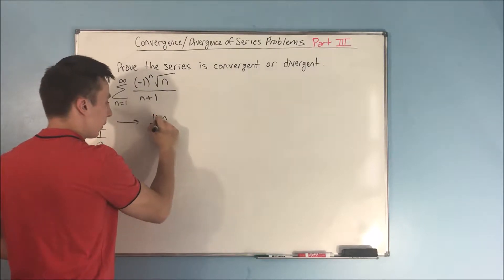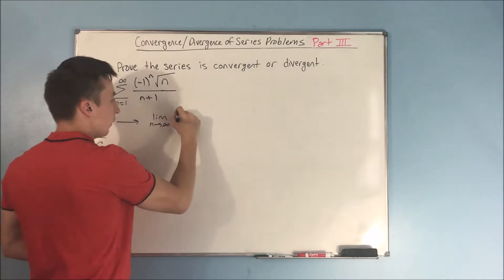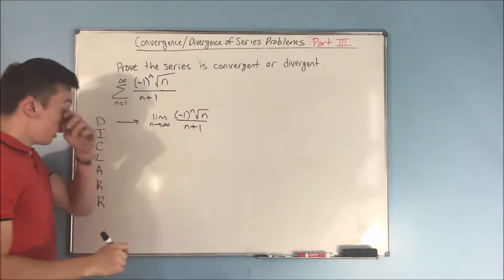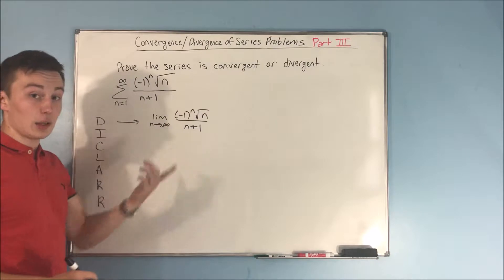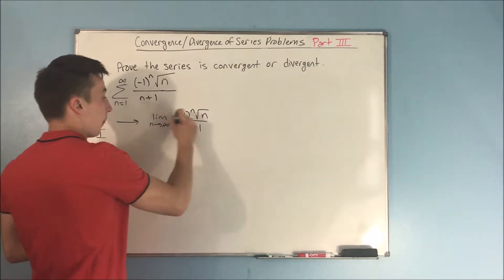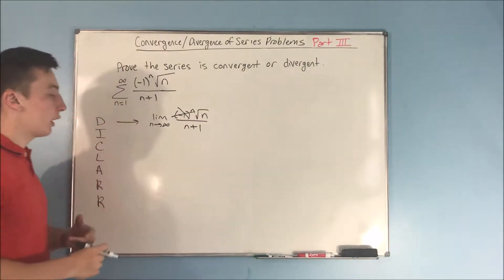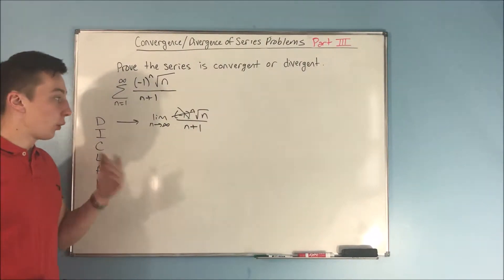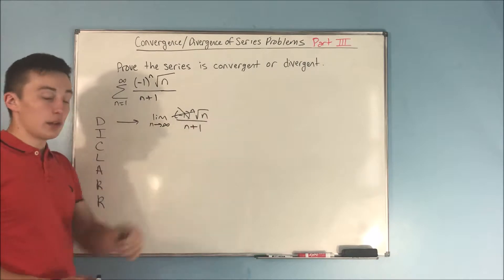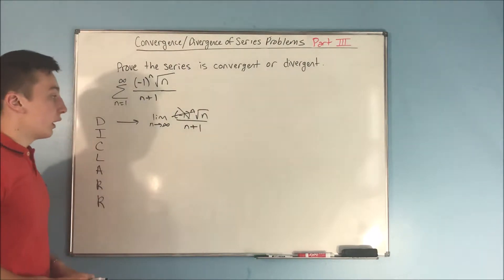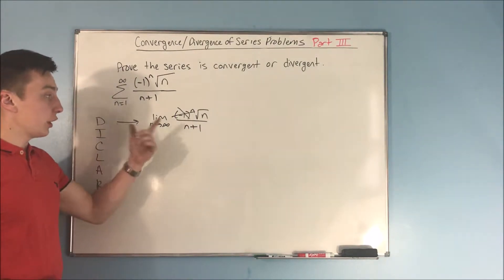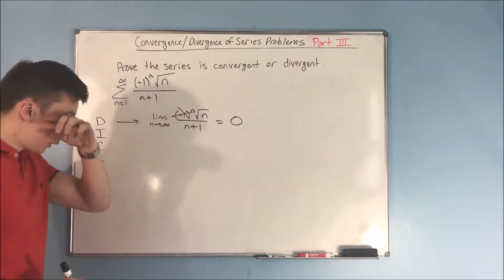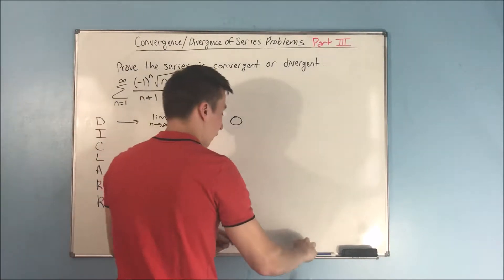The limit as n approaches infinity of negative one to the n times the square root of n over n plus one. That negative one to the n is not going to matter at all for your limit. So you're just going to have the square root of n over n plus one. You know that n is going to be bigger than your square root of n, so this will equal zero. The test for divergence does not work here.